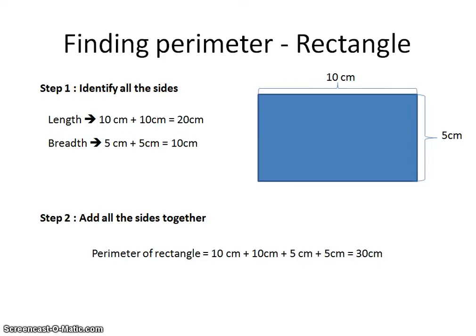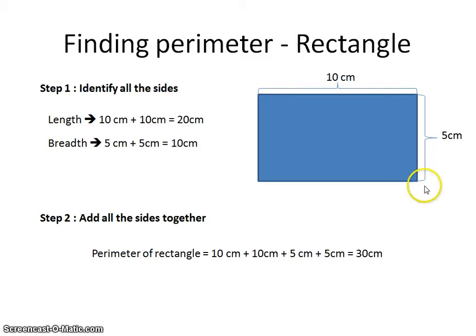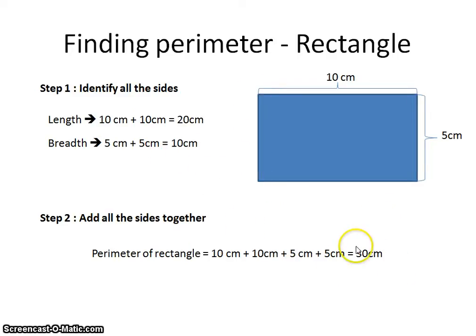How about finding the perimeter of a rectangle? Remember, perimeter is equivalent to running around the rectangle. Let's identify all the sides: we have 10 centimeters, then 5 centimeters, then another 10 centimeters, and another 5 centimeters. That gives us a total of 30 centimeters for the perimeter.